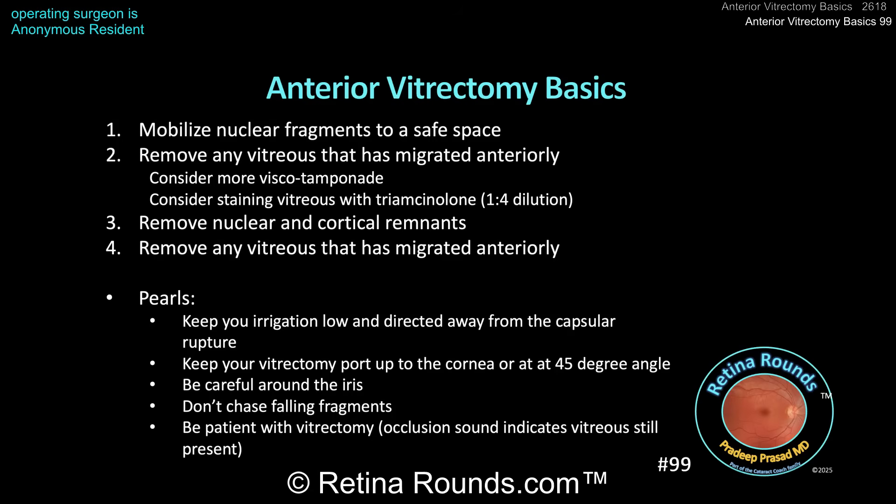Some pearls when performing an anterior vitrectomy. With one hand, you're going to be irrigating — infusing BSS into the anterior chamber. Keep the irrigation level lower so you're not overly deepening the anterior chamber and pushing BSS into the posterior segment, which would hydrate the vitreous and encourage it to come forward. Try to point the irrigation handpiece away from the capsular rupture to decrease the likelihood of hydrating the vitreous or encouraging more vitreous to come forward.